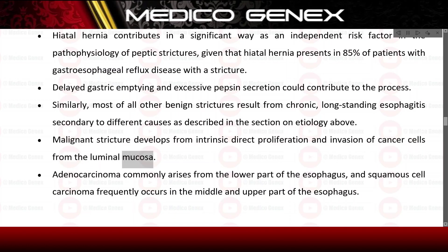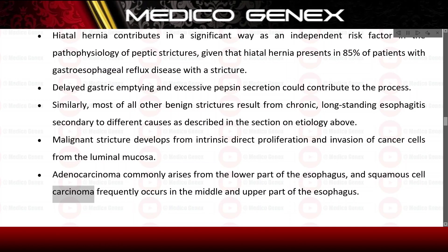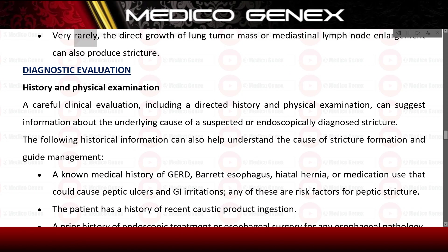Malignant stricture develops from intrinsic direct proliferation and invasion of cancer cells from the luminal mucosa. Adenocarcinoma commonly arises from the lower part of the esophagus, and squamous cell carcinoma frequently occurs in the middle and upper parts. Very rarely, direct growth of a lung tumor mass or mediastinal lymph node enlargement can also produce stricture.